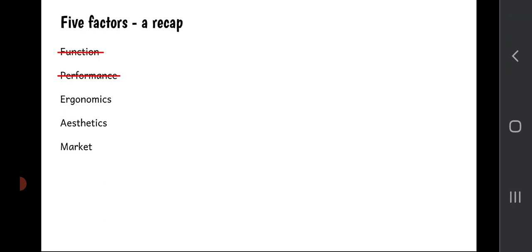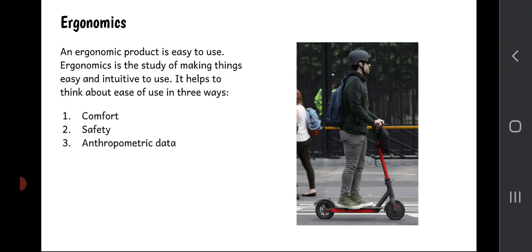An incredibly important design factor, because if you want to be a successful product designer you have to understand ergonomics. What is ergonomics? This is our first slide that we're going to have to copy down. Let me explain it to you first and you can pause it and copy it down. An ergonomic product is a product which is easy to use. Ergonomics is the study of making things easy and intuitive to use, and it's so important because when a product is easy to use then people feel happy using it, they feel satisfied, they feel content.